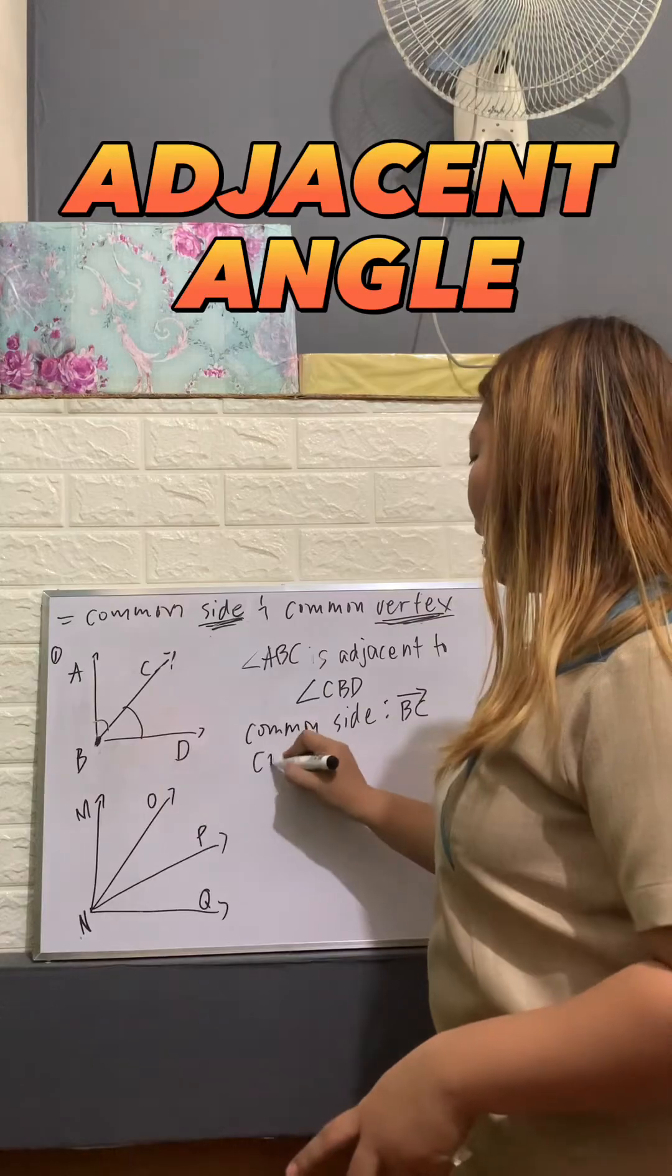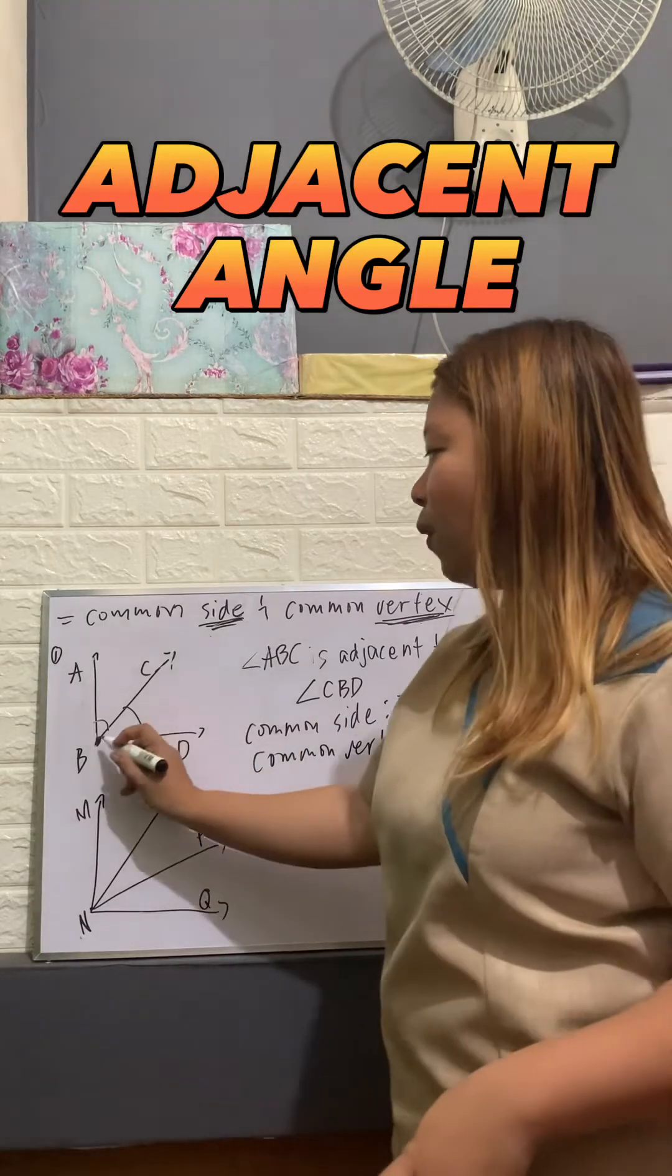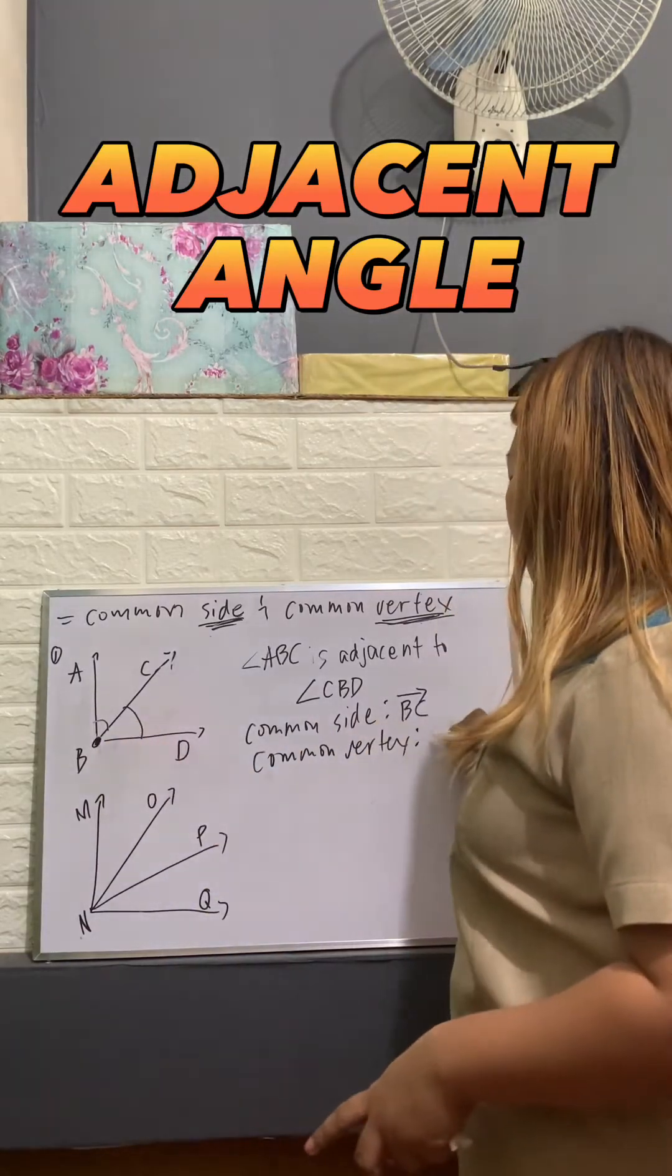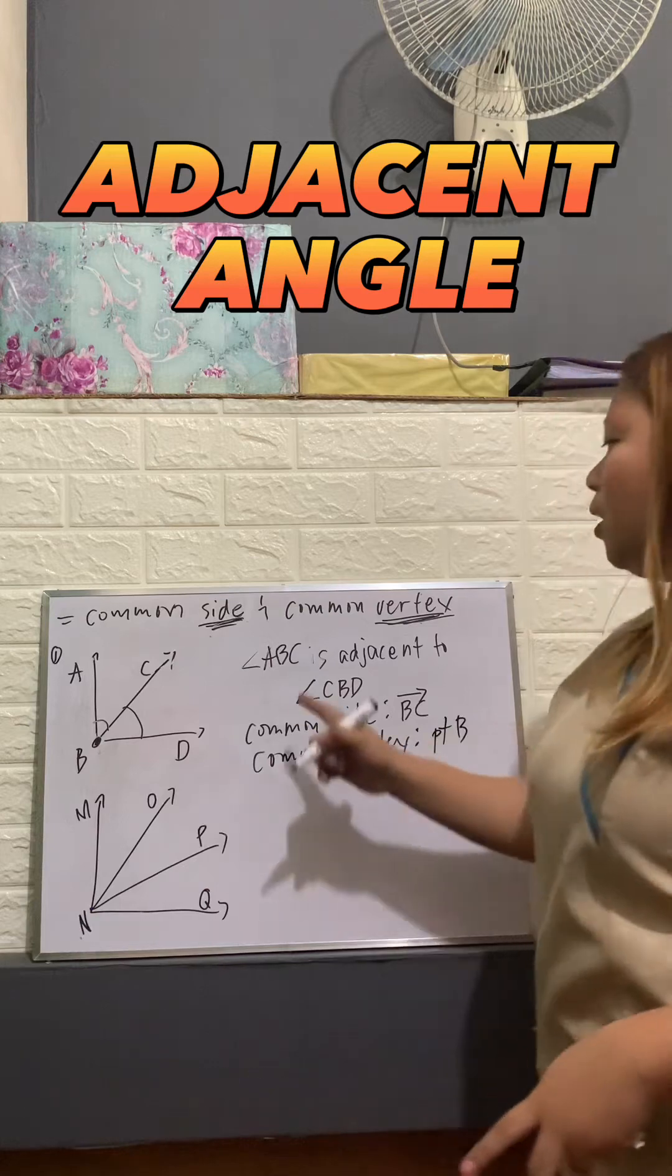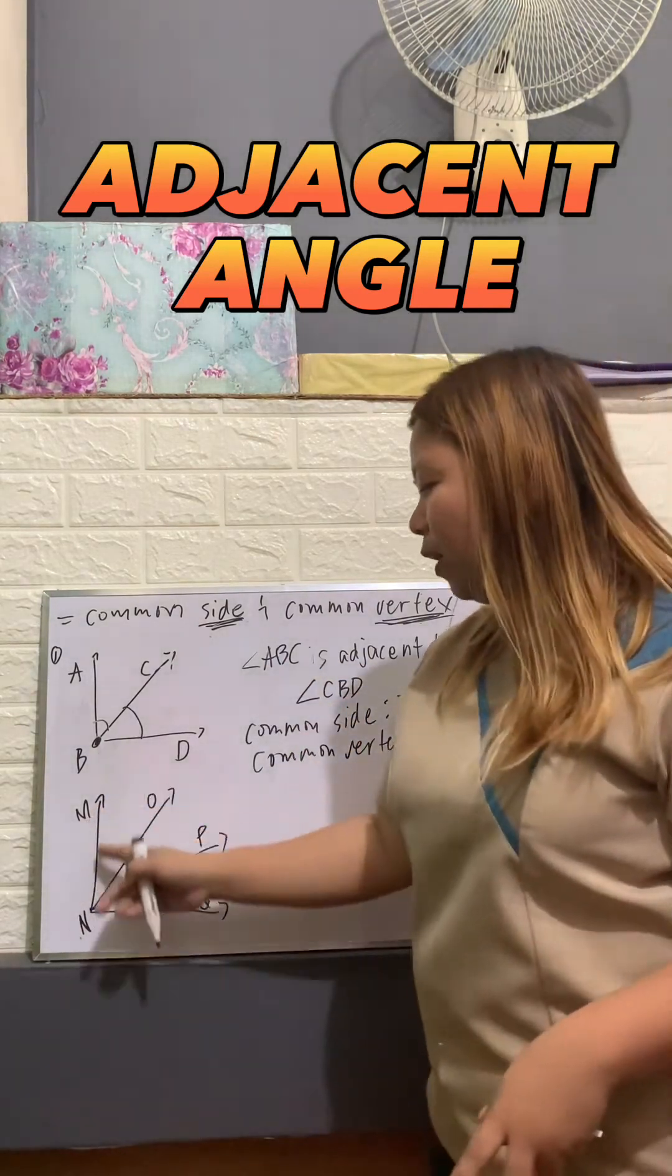How about the common vertex? We have one vertex here, which is point B. So angle ABC is really adjacent to angle CBD.